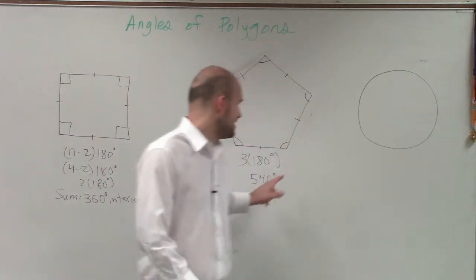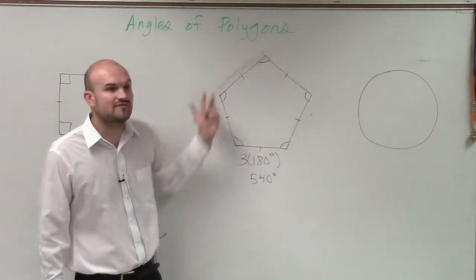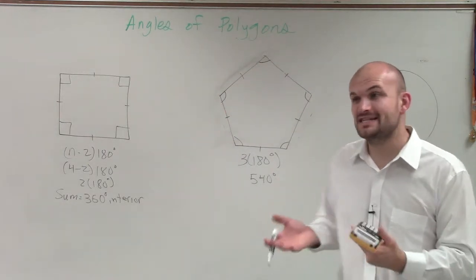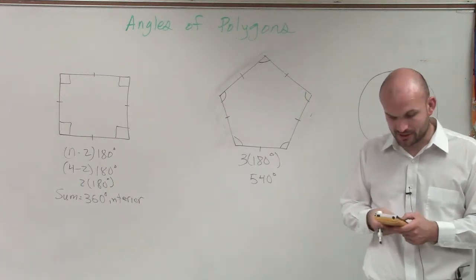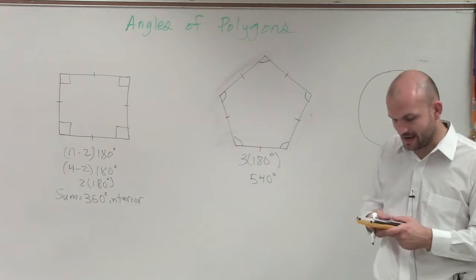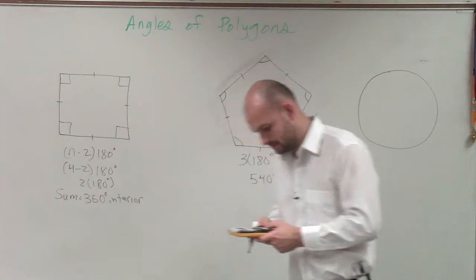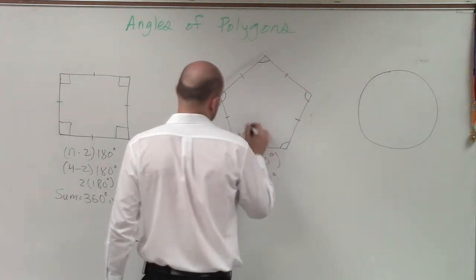Now, ladies and gentlemen, if I have 540 degrees, how many angles do I have here? 1, 2, 3, 4, 5. So therefore, I need to determine what the measure of each one of these angles are, because they're all the same. So what I'll do is take 540 and divide that by 5, and I get 108. So that means each one of these angles is 108 degrees.